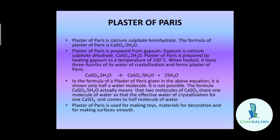Now we will see the uses of plaster of paris. It is used for making toys, materials for decoration, and for making surfaces smooth. A very important use is in hospitals for setting fractured bones in the right position to ensure correct healing. When plaster of paris is mixed with a proper quantity of water and applied around the fractured limb, it sets into a hard mass and keeps the bone joints in a fixed position.